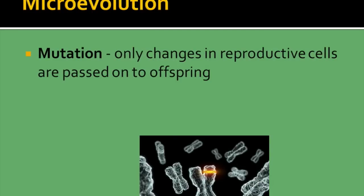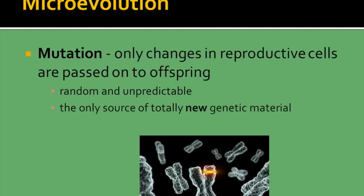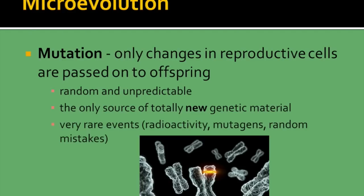Mutation only produces changes in the reproductive cells that get passed on to offspring. These can be random and unpredictable. They are the only source of completely new genetic material, and they occur from very rare events such as radioactivity or just random mistakes.